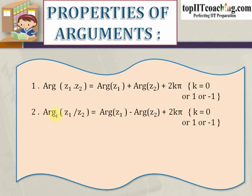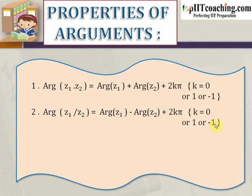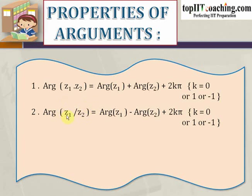The second is: argument of z1 by z2 is equal to argument of z1 minus argument of z2 plus 2kπ, where k is equal to 0, 1, or minus 1. So if we have two complex numbers z1 and z2, then the argument of the division, that is z1 by z2, is equal to argument of z1 minus argument of z2 plus 2kπ.